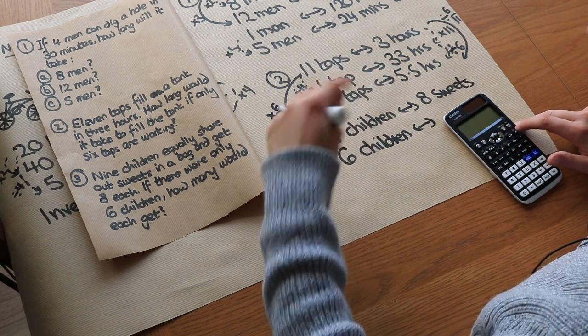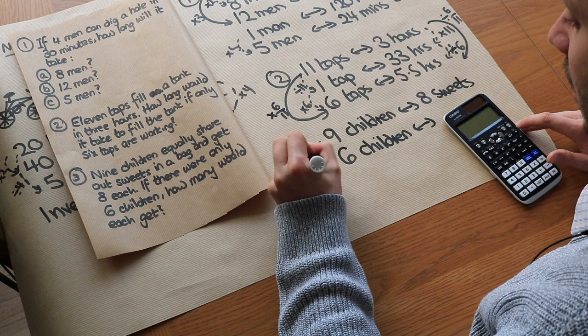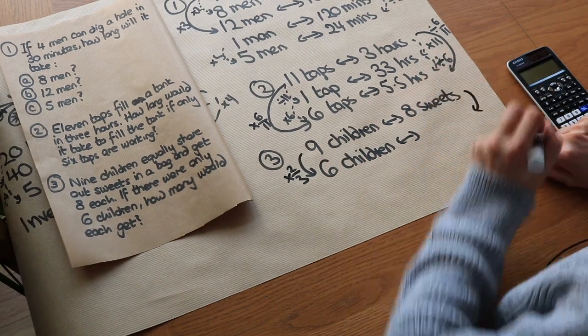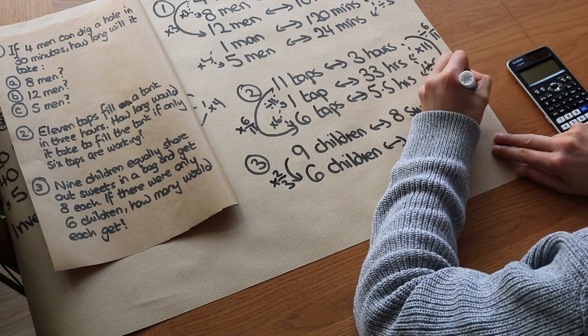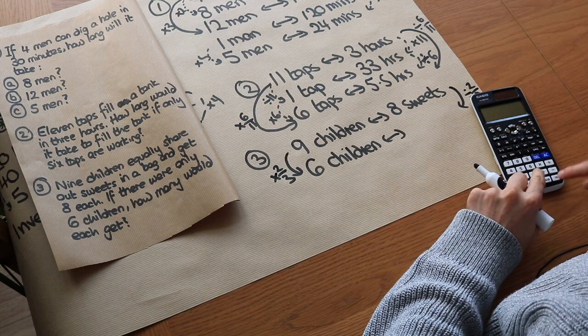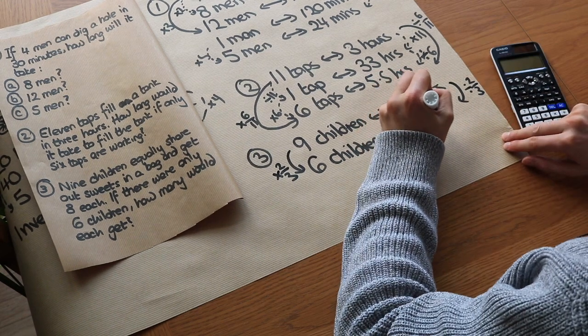So we're timesing by 2 thirds to get from 9 to 6, which means we do the opposite, because they're inversely proportional. So we divide by 2 thirds. So we do 8 divided by 2 thirds, and that gives us 12 sweets.